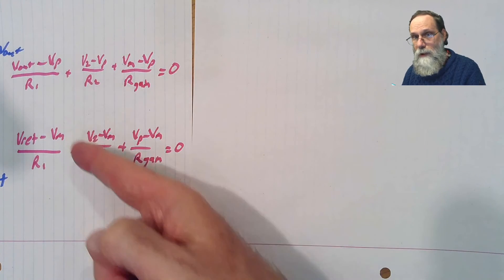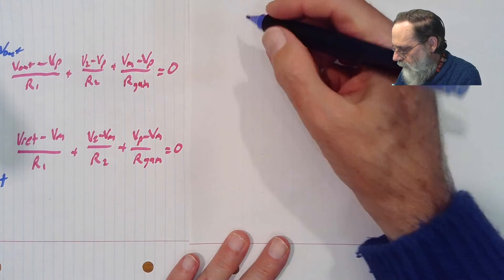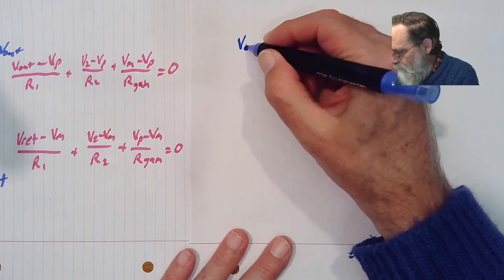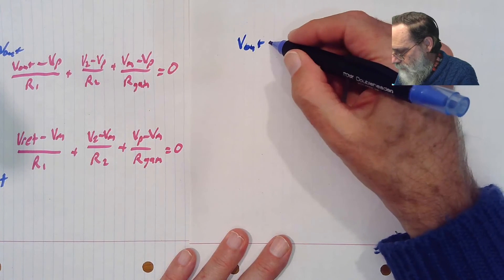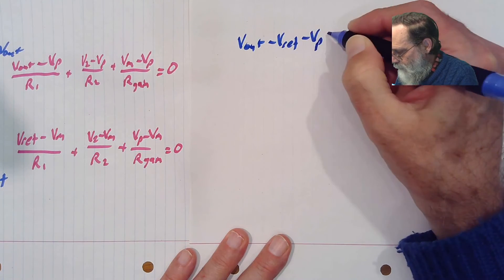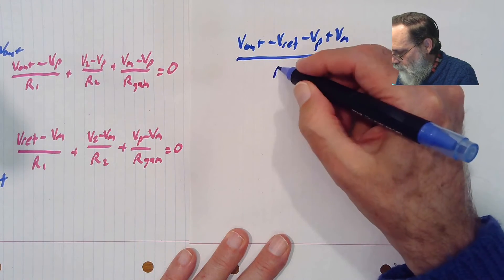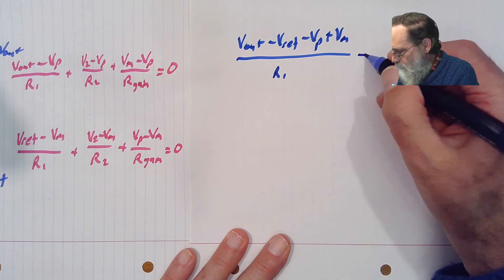So I'm going to take the top equation here minus the bottom equation, and I should end up with vout minus vref minus vp plus vm over r1. Plus,